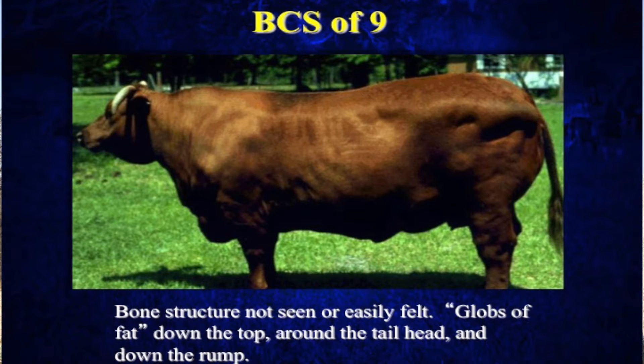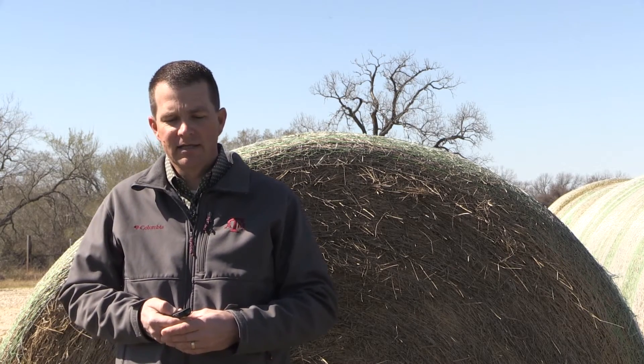Here's a body condition score nine. We don't hardly see any cattle that get to a nine if they're in production and actually producing a calf year after year. This is a picture of a cow that probably has never had a calf, and you can see the fat that's really shelving off her tail head and down her top line. When cows get into a body condition score eight or nine, because of that excess fat, reproductive performance will actually decrease and those cows may not breed back. That's certainly the case when we get replacement heifers — if we get them too fat, we will see some challenges getting those cattle bred.